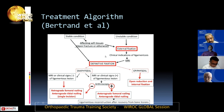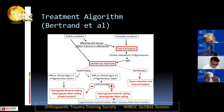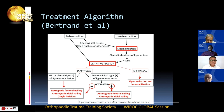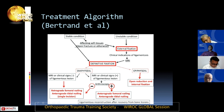For definitive fixation in diaphyseal fractures with no MRI or clinical signs of ligamentous injury, one can proceed with a single incision — retrograde femoral nailing and anterograde tibial nailing. If there are signs of ligamentous lesion on MRI, consider arthroscopy. It is better to perform anterograde femoral nailing and anterograde tibial nailing, then do ligamentous reconstruction after recovery from the bone lesions.